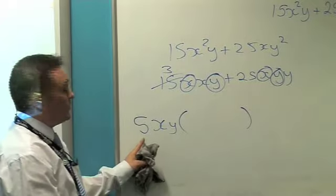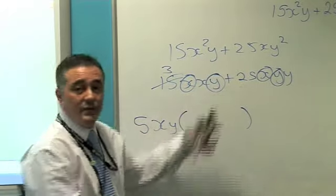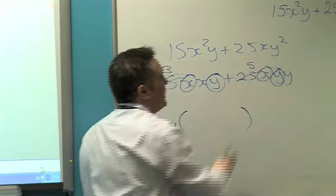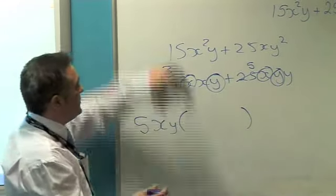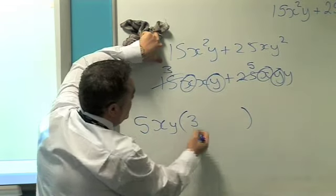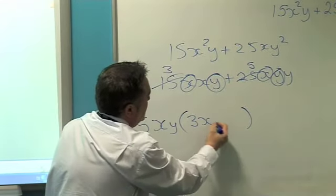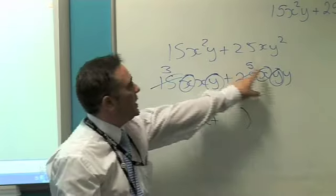25 now. What do I have to multiply 5 by to get my 25? The answer is 5. Simply now, just write inside this bracket what I've left up there. I've got 3x plus 5y.